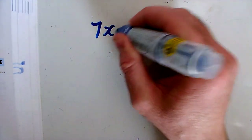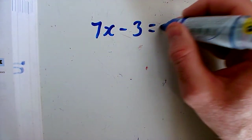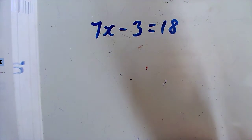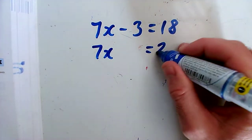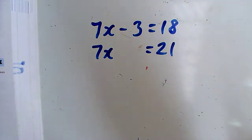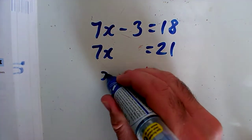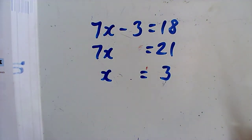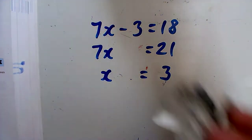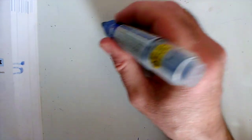Number one: 7x minus 3 equals 18. I'm going to add 3 to both sides to get closer to the bit with x in, so 7x equals 21. Then I'm going to divide both sides by 7 to get what a single x is, so x equals 3. Whatever you do to one side, you have to do exactly the same to the other side.